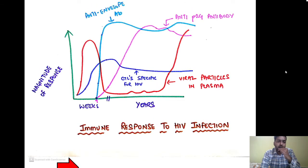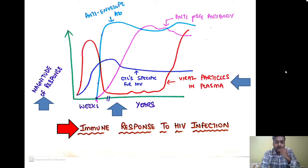Looking at the immune response to HIV infection, the x-axis shows the time frame in weeks and years, and the y-axis shows the magnitude of response. Initially, viral replication increases and within a few weeks becomes very high. Because of the rise in cytotoxic T lymphocytes, the viral level comes down. Cytotoxic T lymphocytes start rising within 2 to 3 weeks and peak around 9 to 12 weeks, mounting an immune response to curb viral replication. We also have the anti-p24 antibody starting a few weeks later, along with anti-envelope antibodies.